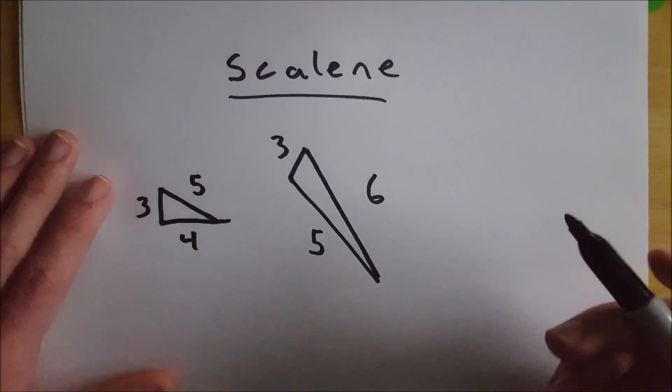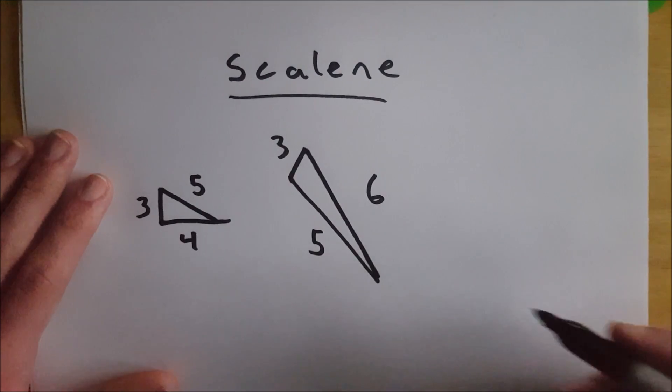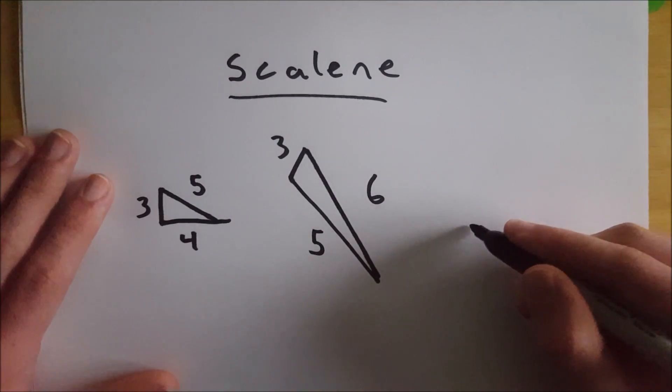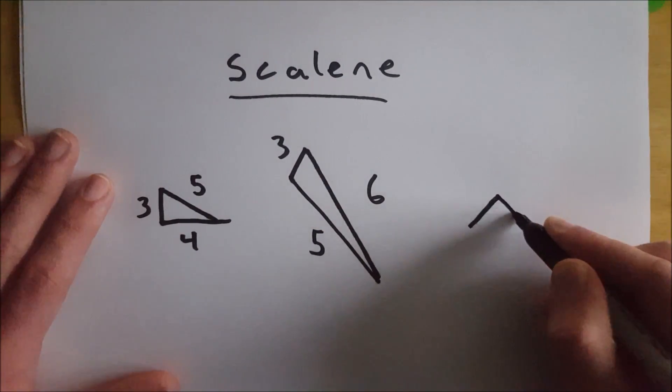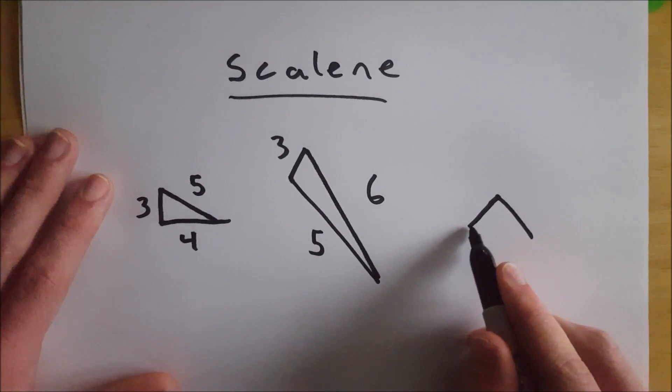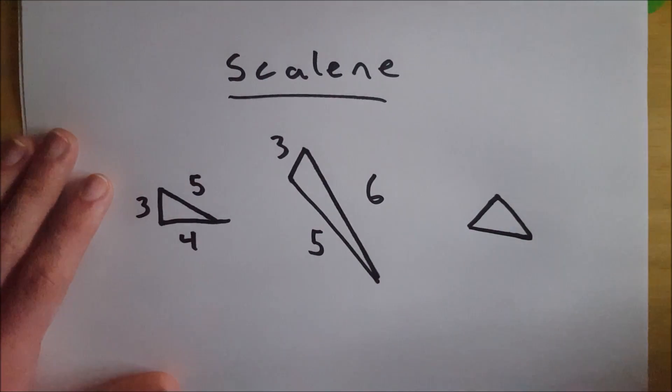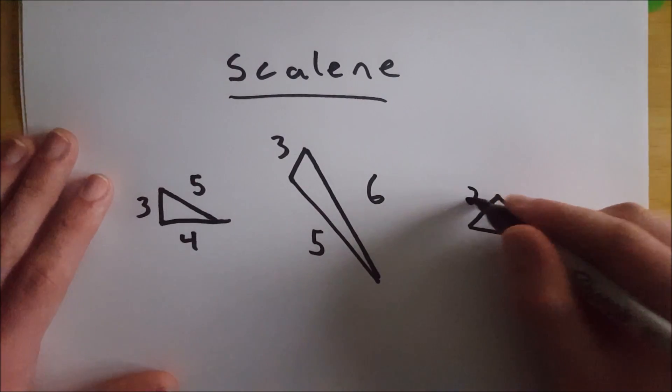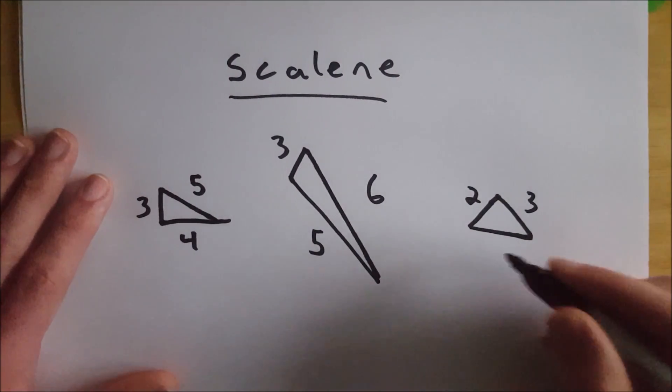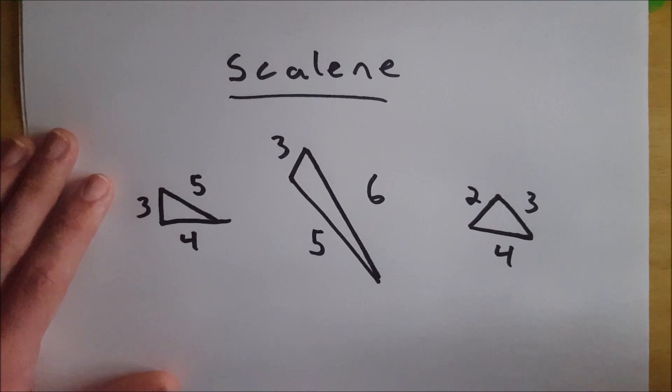Because none of these sides are equal in a scalene triangle. I'll give you one more example, just so you see as many scalene triangles as I can provide. Something like that. And maybe this is 2, maybe this is 3, and maybe this is 4.